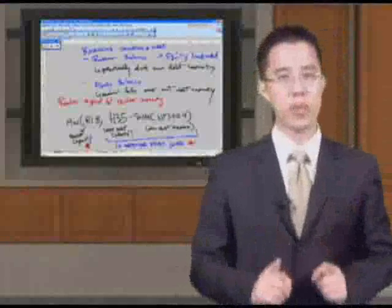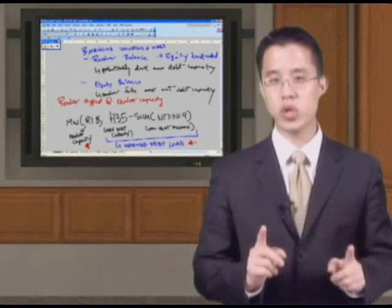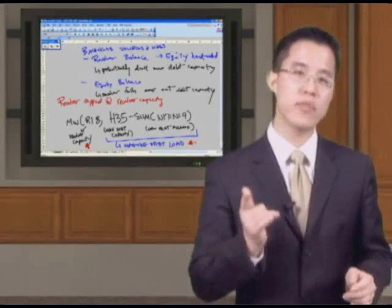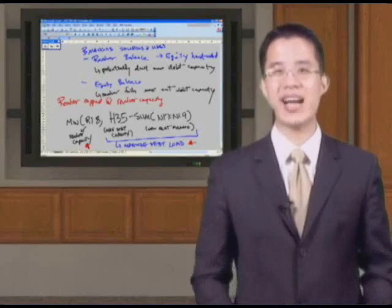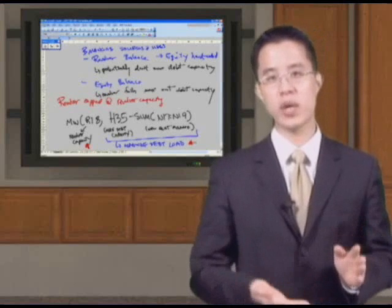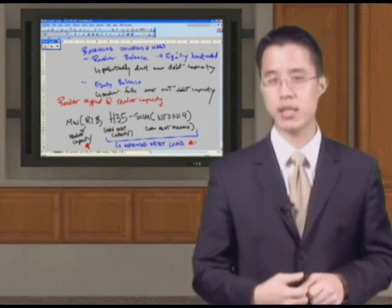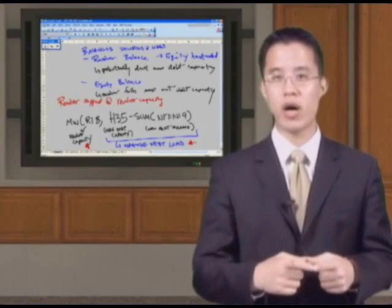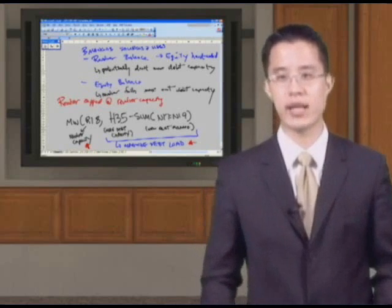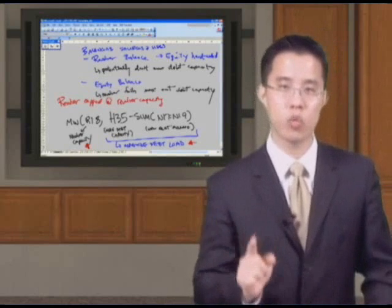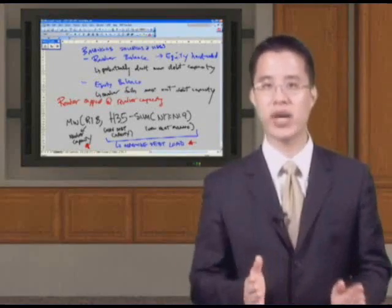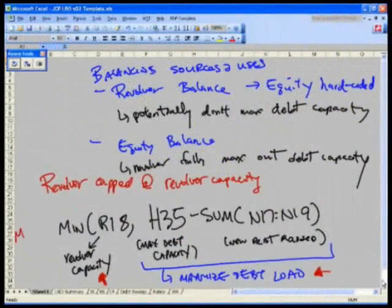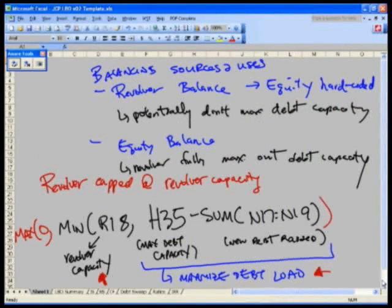But, recall this one more thing you need to incorporate here. Remember, in order to get our proper debt sweep working, what do we have to do? We have to make sure the revolver balance never goes below zero. So in the event that you accidentally hard-coded your term loan, senior, or sub-debt, such that that was greater than H35, your maximum debt capacity, you're going to have a negative number. Again, if you accidentally coded your total debt that you borrowed higher than your debt capacity, your revolver's going to go negative. Don't let it go negative, because then your debt sweep will not work. So what we need to do now is to wrap a max zero function around this as follows. We will now wrap a max zero around this whole thing to say as follows: never go negative.